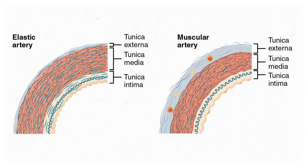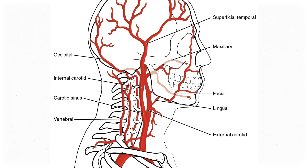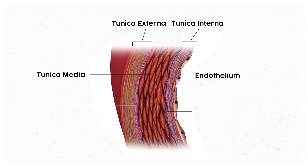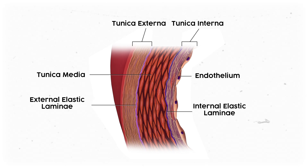Take elastic arteries, for example. As the name implies, they have much more elastic connective tissue in them. You see this type in the aorta, pulmonary trunk, and common carotid arteries, and that extra elasticity helps them deal with high pressures. On a histology slide, that looks like a layer of wavy elastic tissue between the tunica intima and media called the internal elastic laminae, and another layer between the media and adventitia called the external elastic laminae.